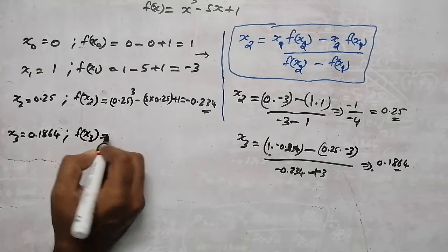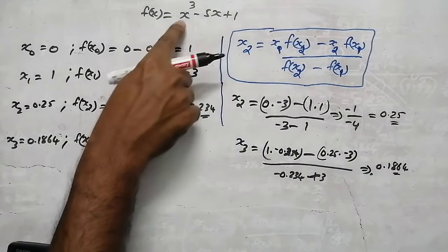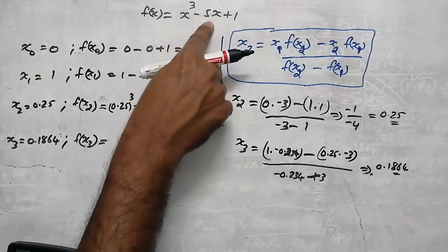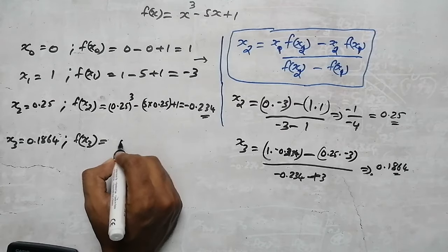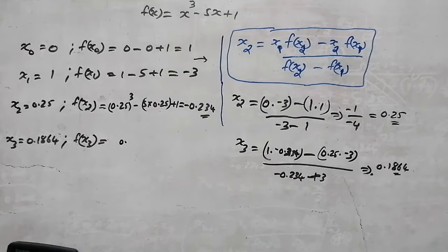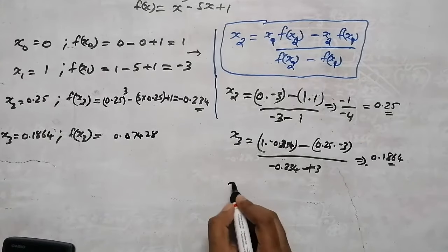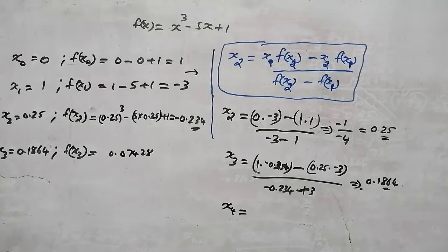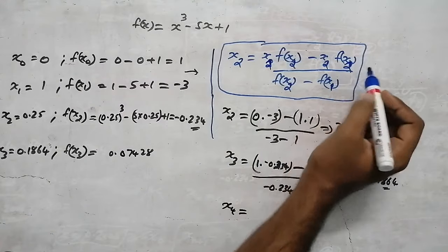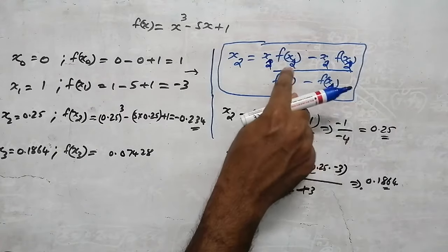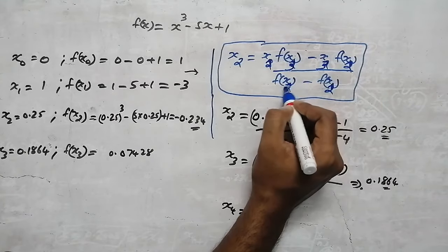Now find f(x₃). Substitute x equal to 0.1964 into the equation: 0.1964 cubed minus 5 times 0.1964 plus 1. We get f(x₃) equal to 0.07428. Now to find x₄, wherever there is 1 in the formula put 2, and wherever there is 2 put 3.